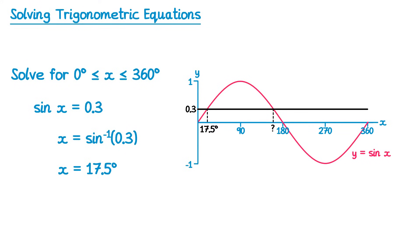The symmetry of the sine graph is different to the cos graph — the line of symmetry is at 90 degrees. So we're looking for the horizontal distance from 0 to 17.5, which is the same as the horizontal distance from 180 back to our solution. So it's 180 this time, not 360. To find the other solution, we do 180 take away 17.5, which gives us 162.5. So we have two solutions: 17.5 and 162.5.